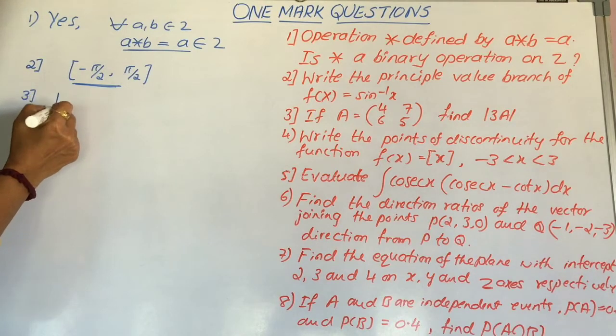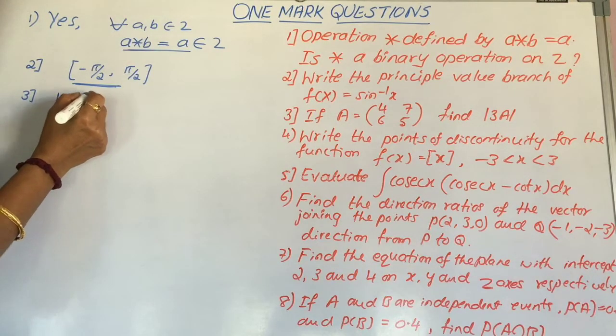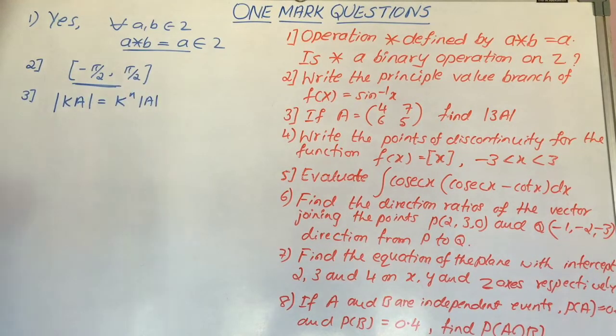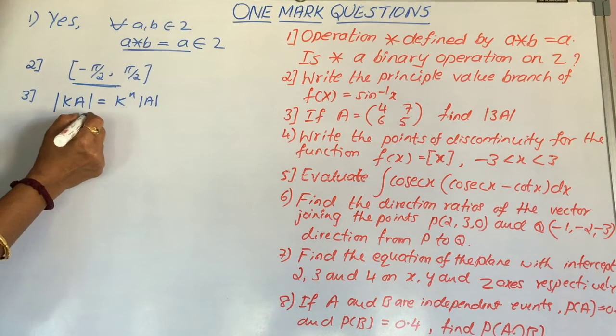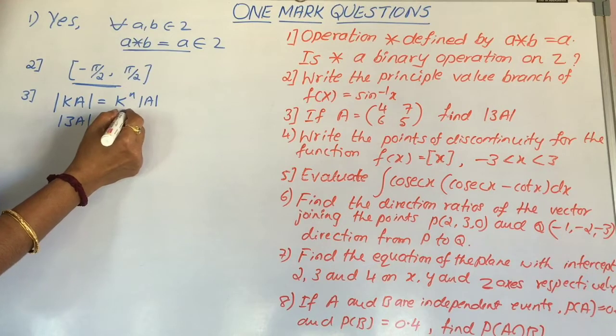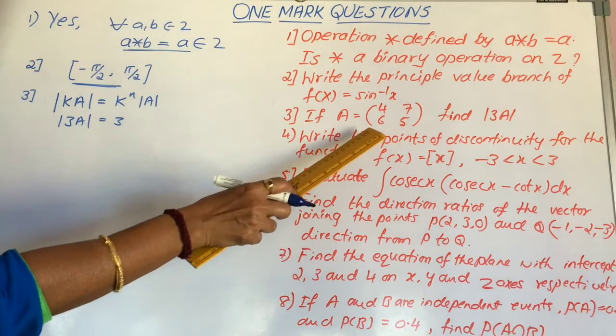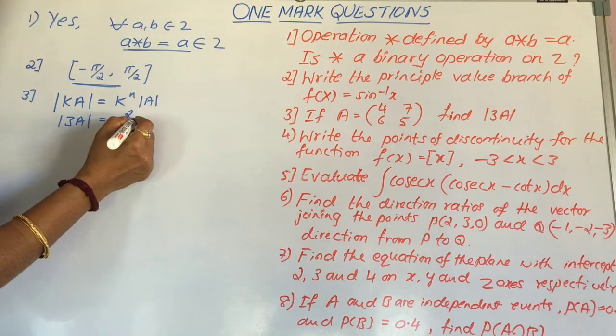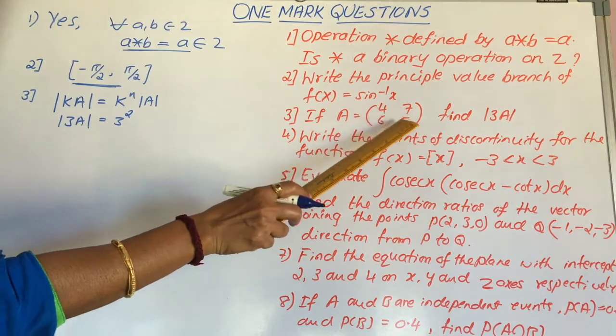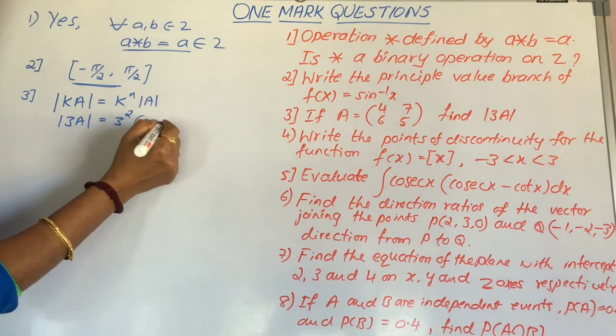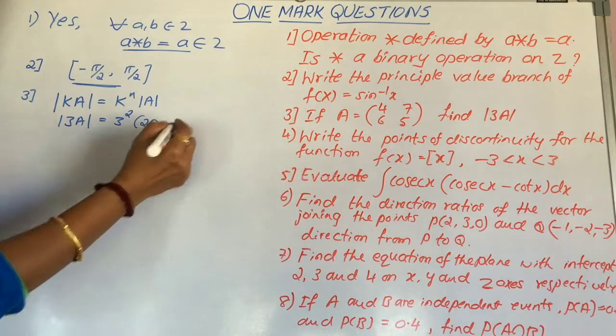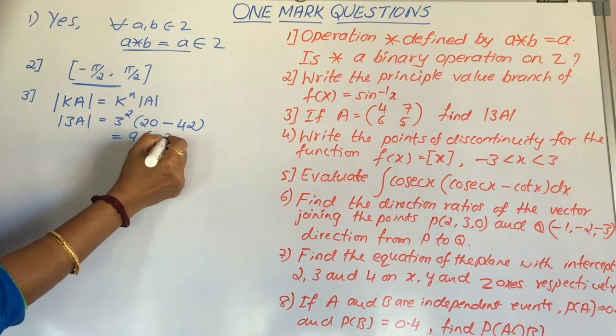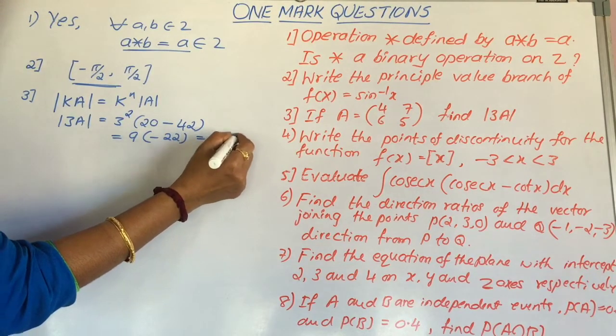We know that determinant of ka is equal to k to the power n into determinant a. Similarly, now determinant 3a is equal to 3 to the power n, where n is the order of the matrix, that is 2 now. So, 3 to the power 2 into determinant a. Value of the determinant a is 5 times 4 is 20 minus 6 times 7 is 42. So, we will get 9 into minus 22, that is minus 198.